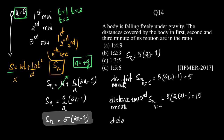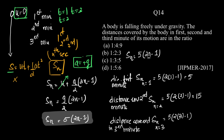The distance covered in the third minute is Sₙ at n = 3, which equals 5(2×3 − 1) = 5 × 5 = 25.